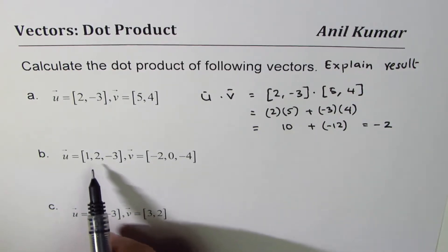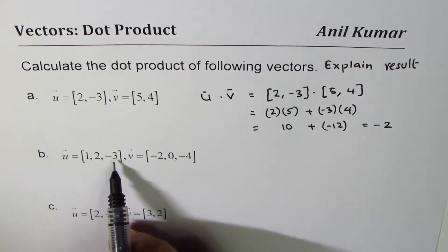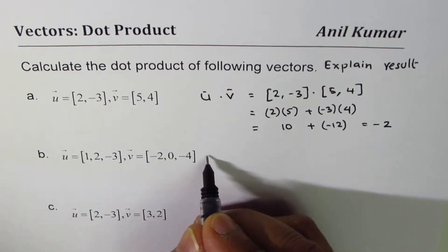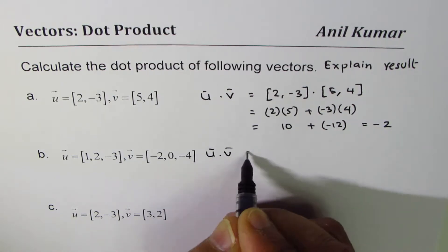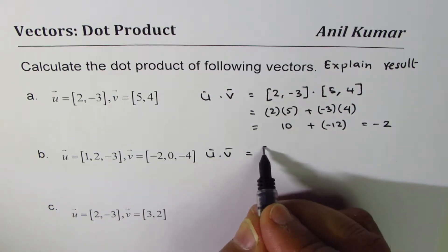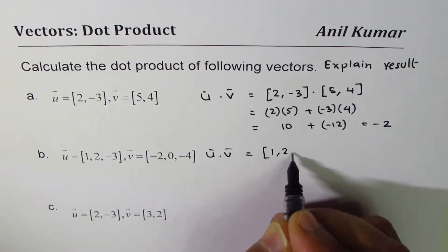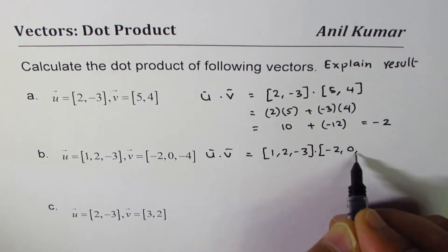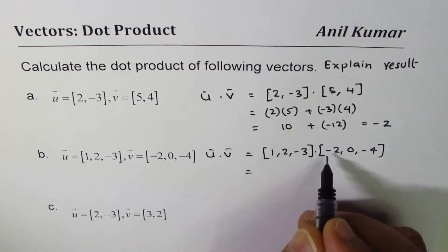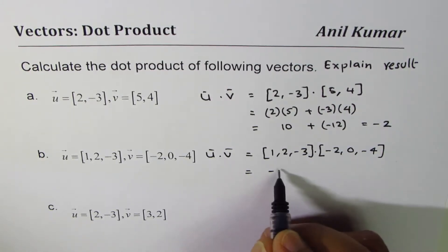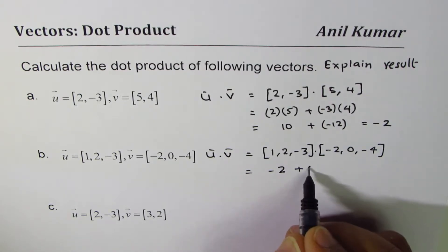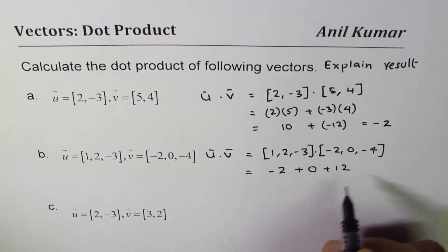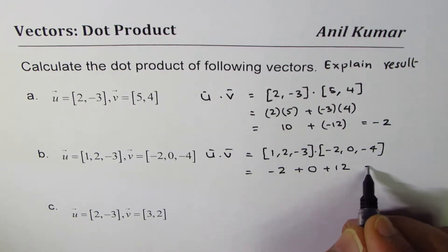The next one here is in R3 with XYZ components. Let's do it here. u dot v equals [1, 2, -3] dot [-2, 0, -4]. 1 times -2 is -2, 2 times 0 is 0, -3 times -4 is plus 12.